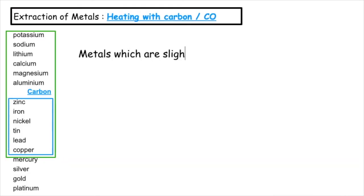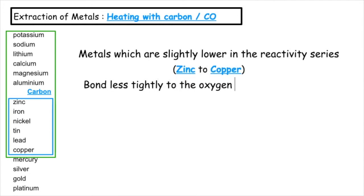Metals which are slightly lower in the reactivity series, between zinc to copper, bond less tightly to the oxygen and need less energy to separate them. Heating with carbon or carbon monoxide is the separation technique we would use to extract that metal from its ore.